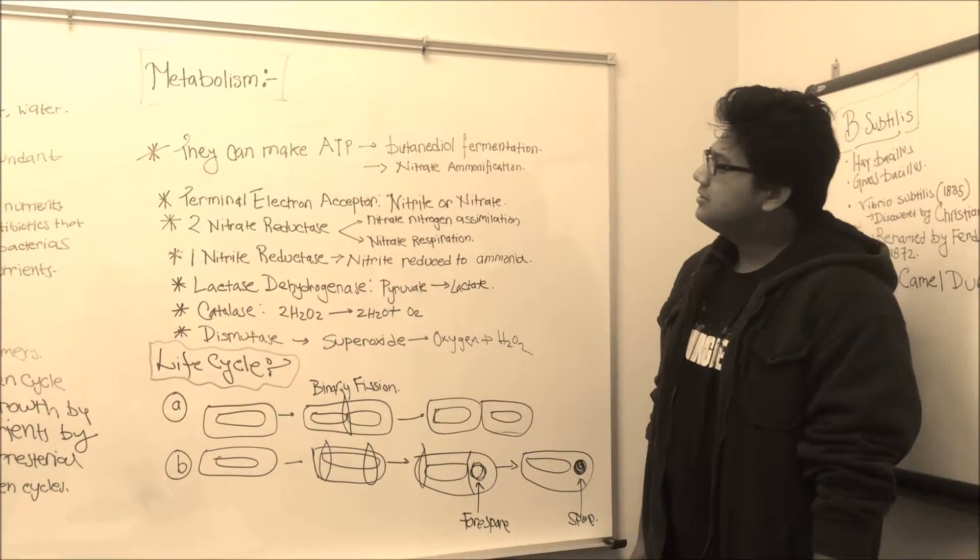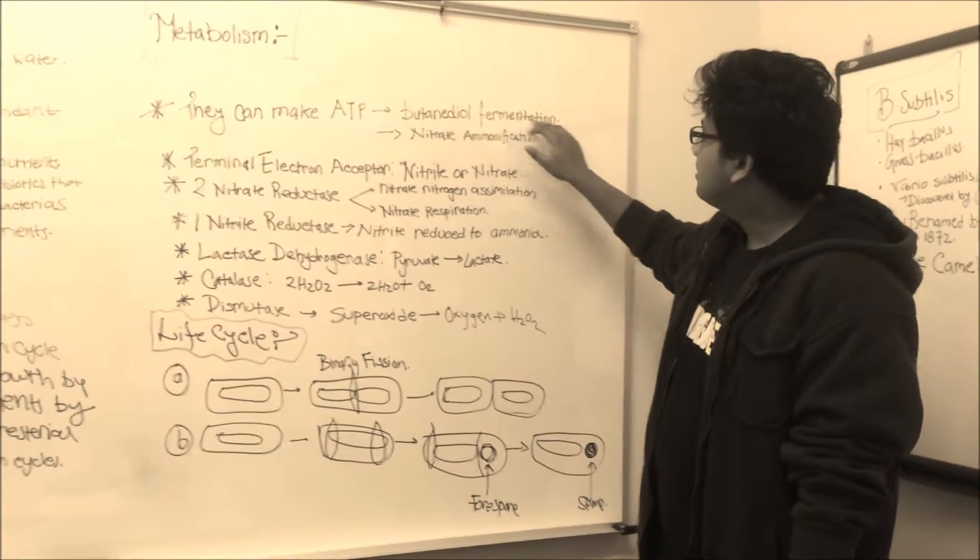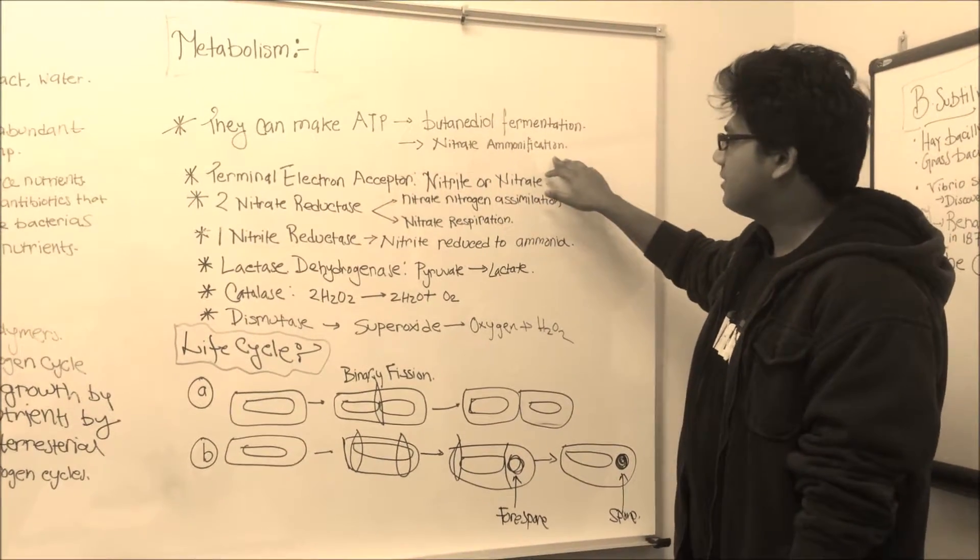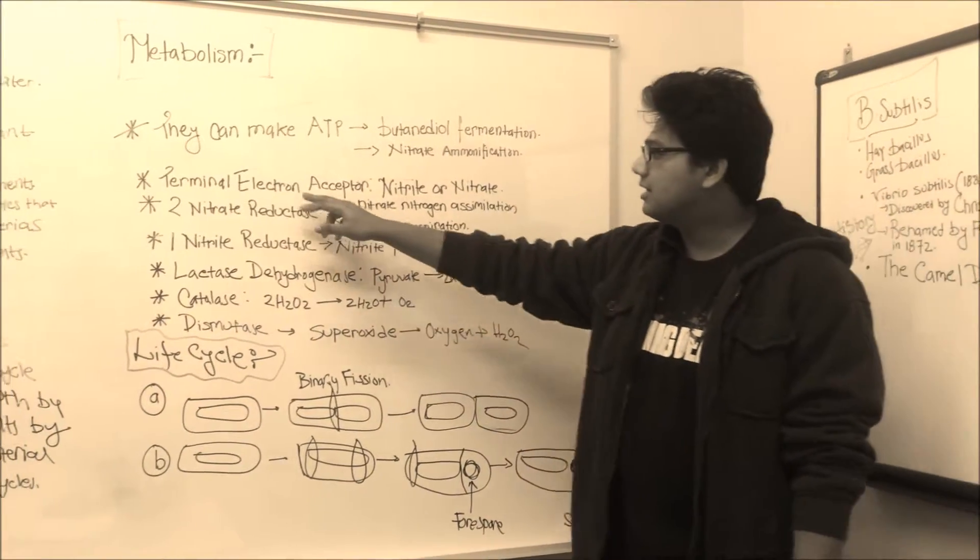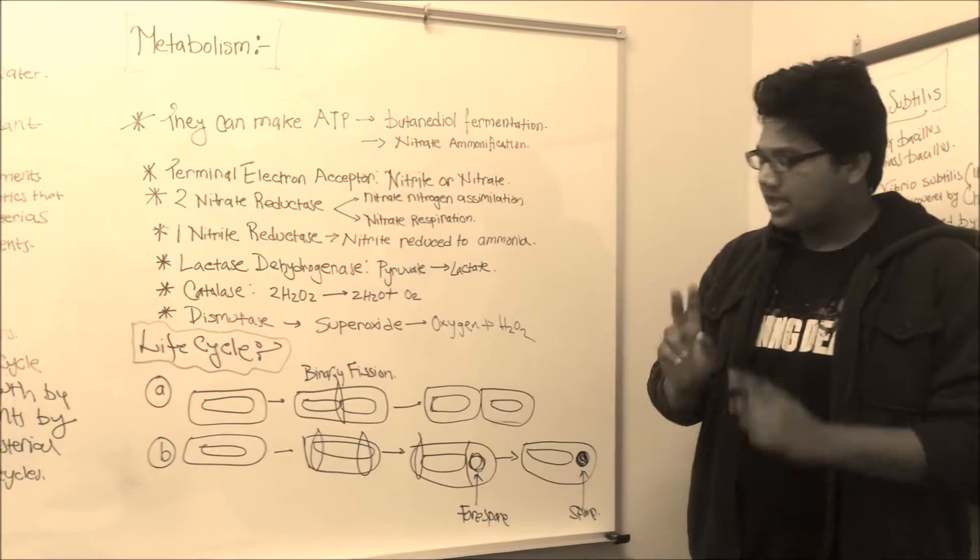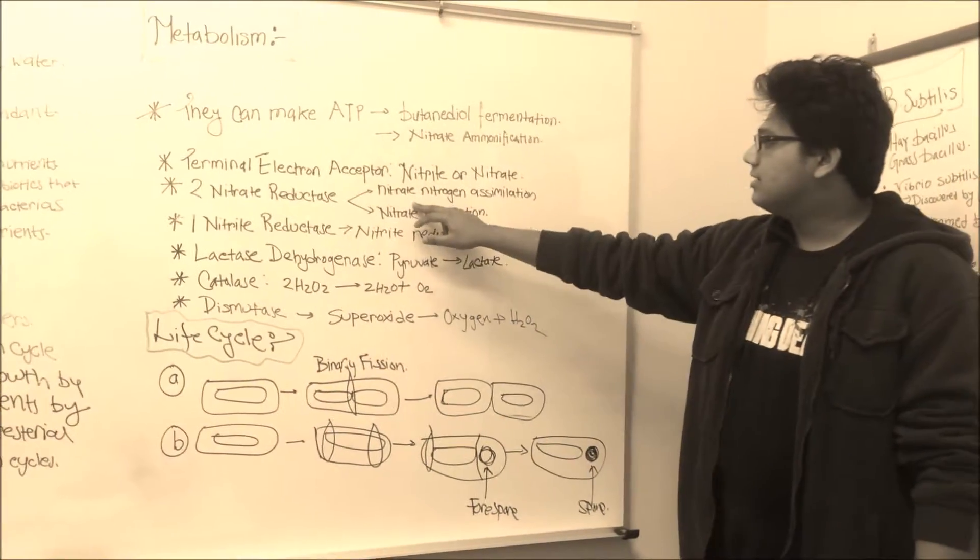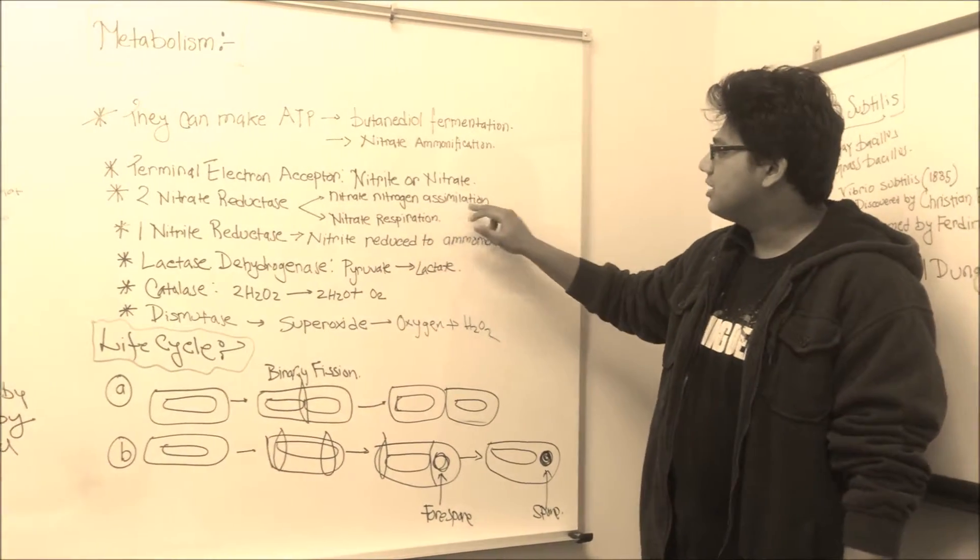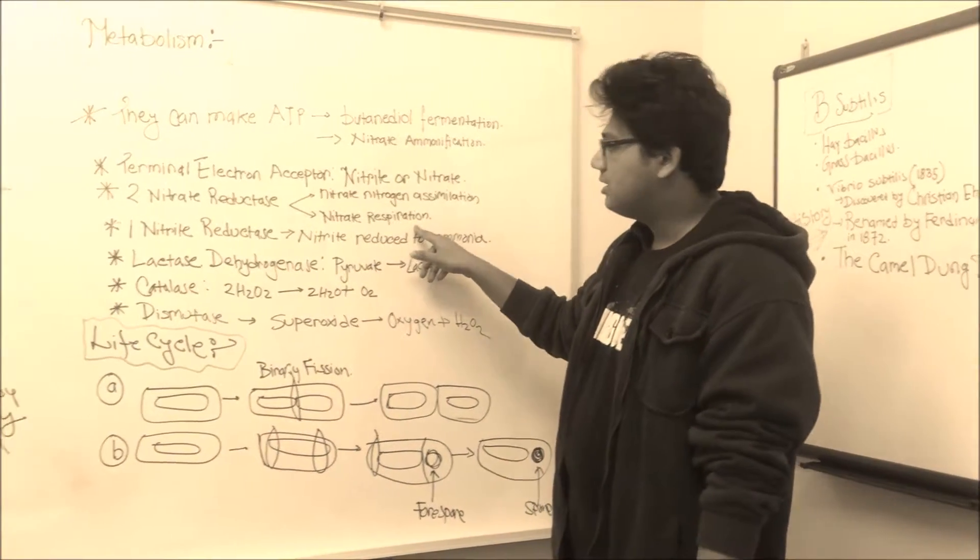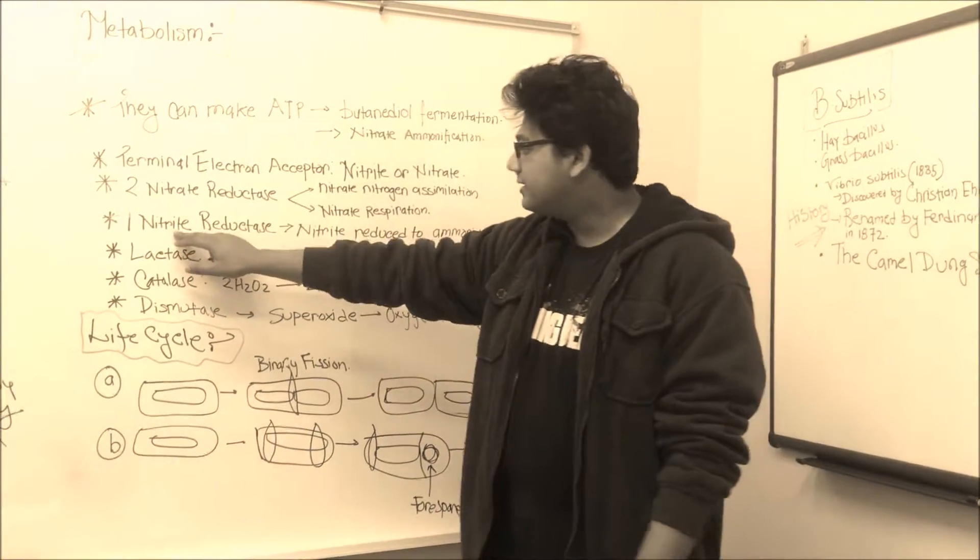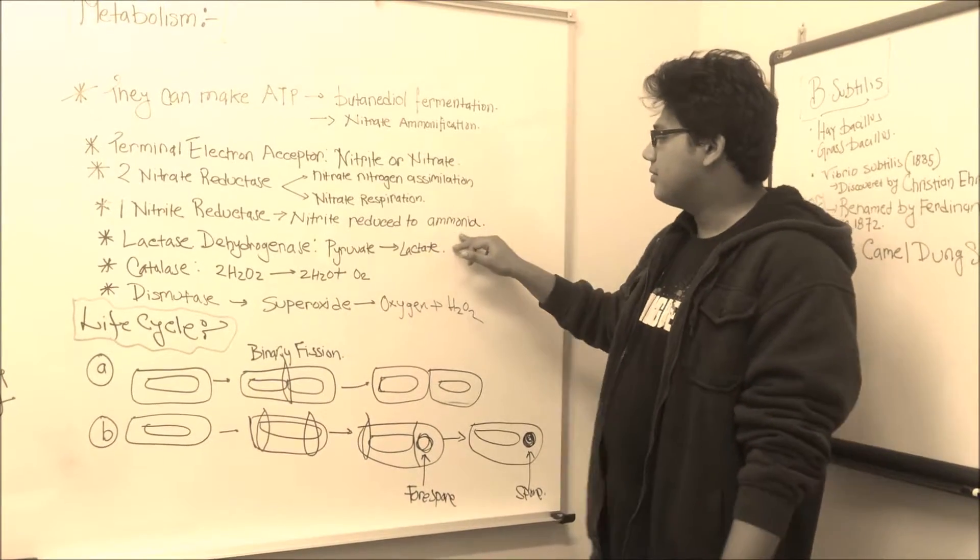B subtilis metabolism. They make ATP through butanediol fermentation or nitrate ammonification. They use nitrite or nitrate as their terminal electron acceptor. Now, they have two unique nitrate reductases. One is involved in nitrate-nitrogen assimilation, whereas the other is involved in nitrate respiration. They have only one nitrite reductase which converts nitrite into ammonia.